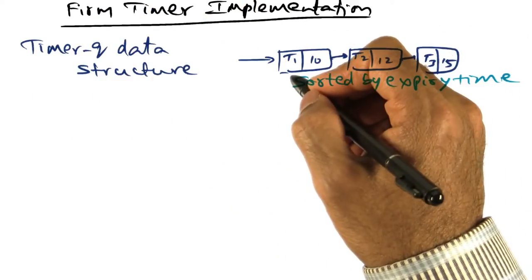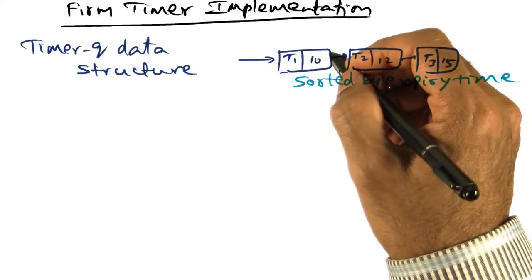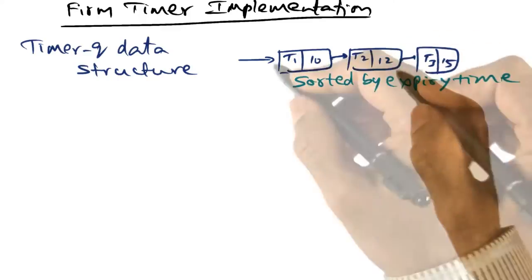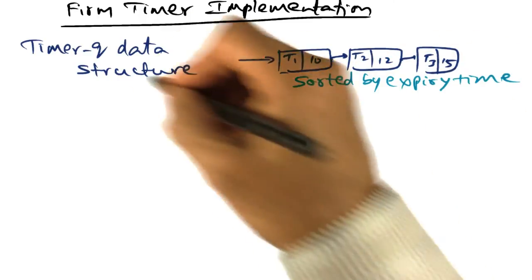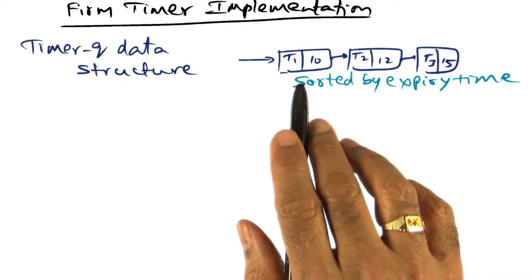The timer queue data structure contains the tasks and the expiry time for that particular task. The tasks are ordered in this timer queue data structure maintained by the kernel, sorted by the expiry time.